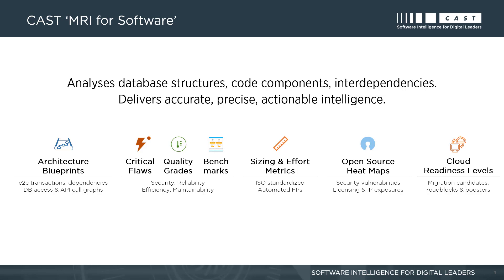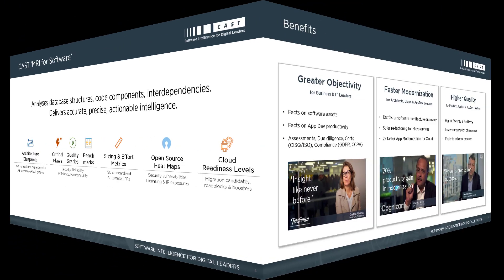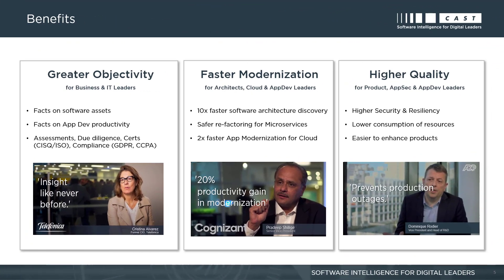Another way to think about software intelligence is it's like having an MRI for your software. CAST has developed the most advanced MRI for software — it analyzes database structures, code components, and interdependencies, and delivers accurate, precise, and actionable intelligence, which includes architecture blueprints, analysis of flaws, quality grades and benchmarks, sizing and effort metrics, open source heat maps, and cloud readiness levels.